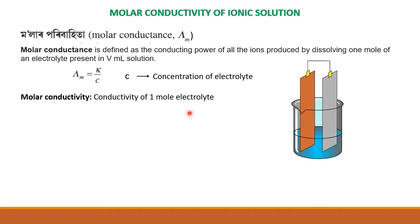One mole electrolyte has a conductivity. We use molar conductivity lambda M. If we set concentration C equal to 1, then molar concentration is 1, and lambda M and kappa are equal.